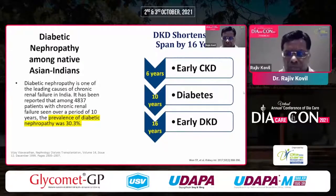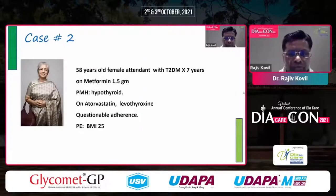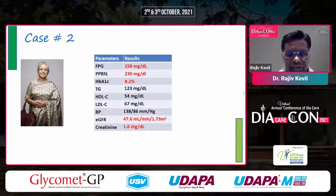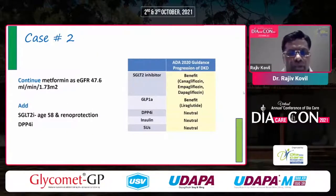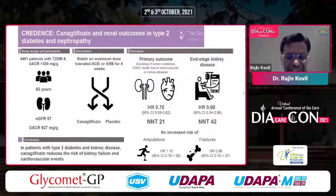CKD reduces lifespan by almost 16 years. Many of our patients with chronic kidney disease may not progress to end-stage renal disease but would have a cardiovascular event prematurely. Here we have a second patient — a 58-year-old female on metformin 1.5g, hypothyroid on statins and levothyroxine, with questionable adherence, BMI 25, HbA1c 8.2, stage 3A CKD with creatinine 1.6 and eGFR 47. Lipids are okay, blood pressure borderline. Should we use an SGLT2, GLP-1, or DPP-4?